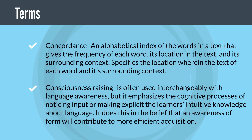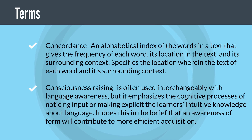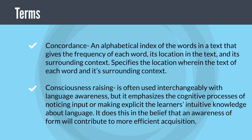Concordance: an alphabetical index of the words in a text that gives the frequency of each word, its location in the text, and its surrounding context. It specifies the location within the text of each word and its surrounding context.